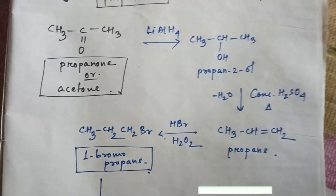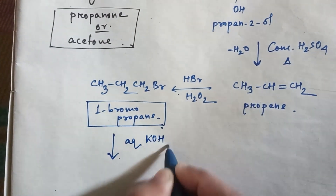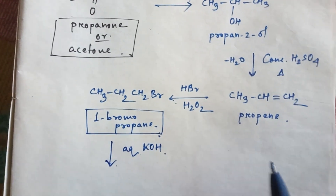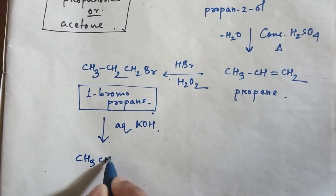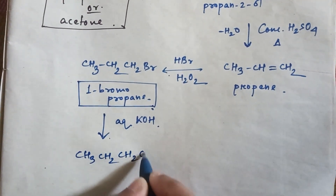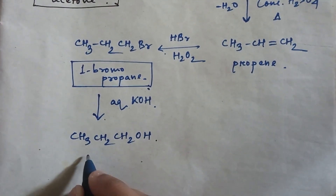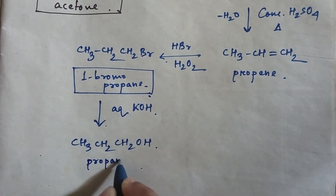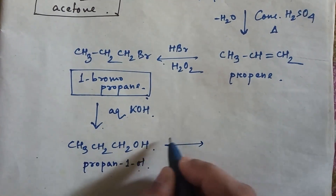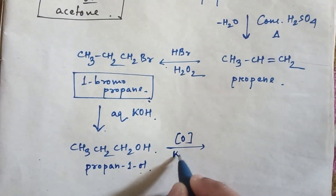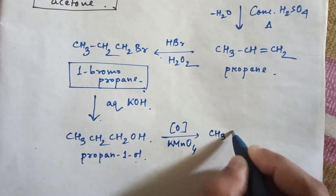Now in this 1-bromopropane, if you use aqueous KOH, then this bromine halogen will convert into an alcohol — an OH group will be introduced — and the product will be CH3CH2CH2OH. So this is propan-1-ol.